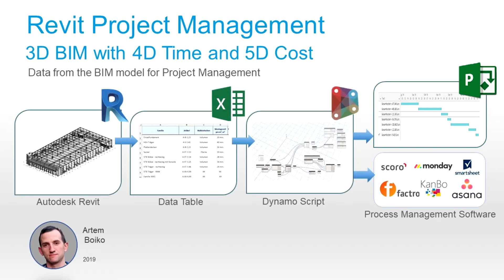With the help of an example, I'd like to show you how you can use project management, 4D time and 5D cost in Autodesk Revit. We will take the volume parameter of the building elements — otherwise known as Revit families — then translate these volume parameters into 4D time and 5D cost.